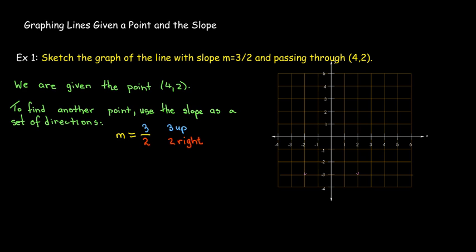So 4, 2 is given. And then I would take 3 steps up. 1, 2, 3. 1, 2 to the right. Get me to this corner right there. Now I've got 2 points.